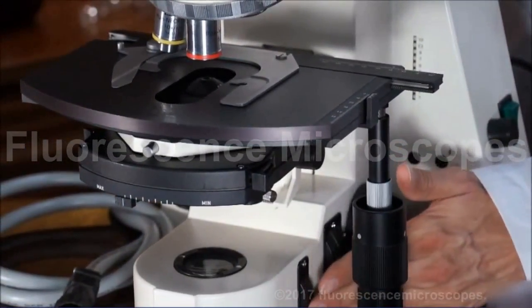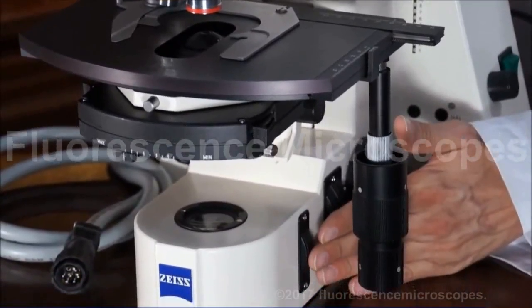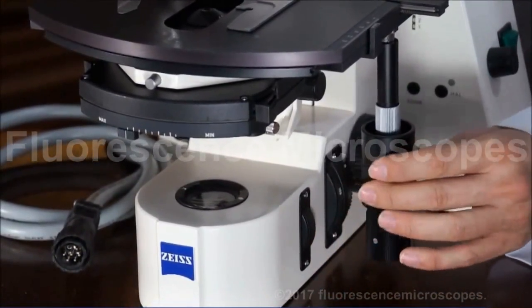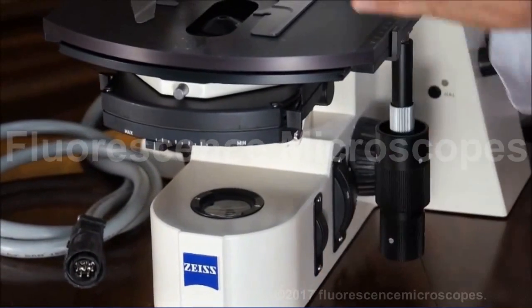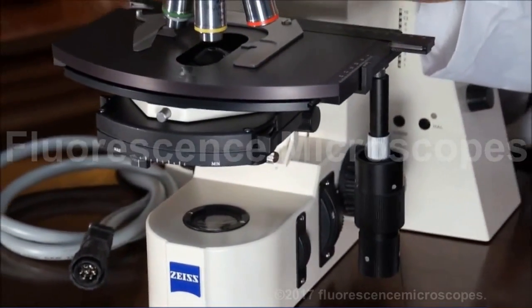Here's a luminous field diaphragm opening. This is what you're going to want to set for Kohler illumination. You're going to want to close this down and turn it to about a 10 power objective.